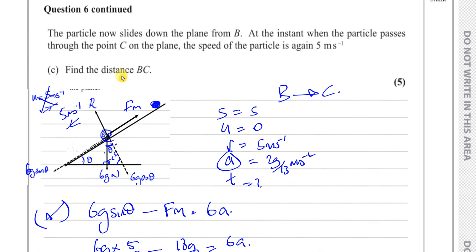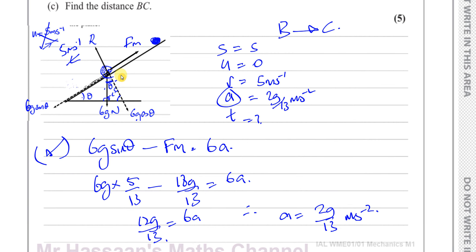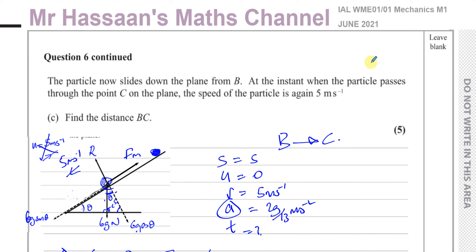Thank you for watching. Other questions from this paper can be found via the link appearing at the end of the video. This topic falls under dynamics with constant acceleration and friction. You can subscribe by clicking the link in the middle of the screen, and find other units like P1, P2, P3, P4, S1, and IGCSE papers via the links in the video description.